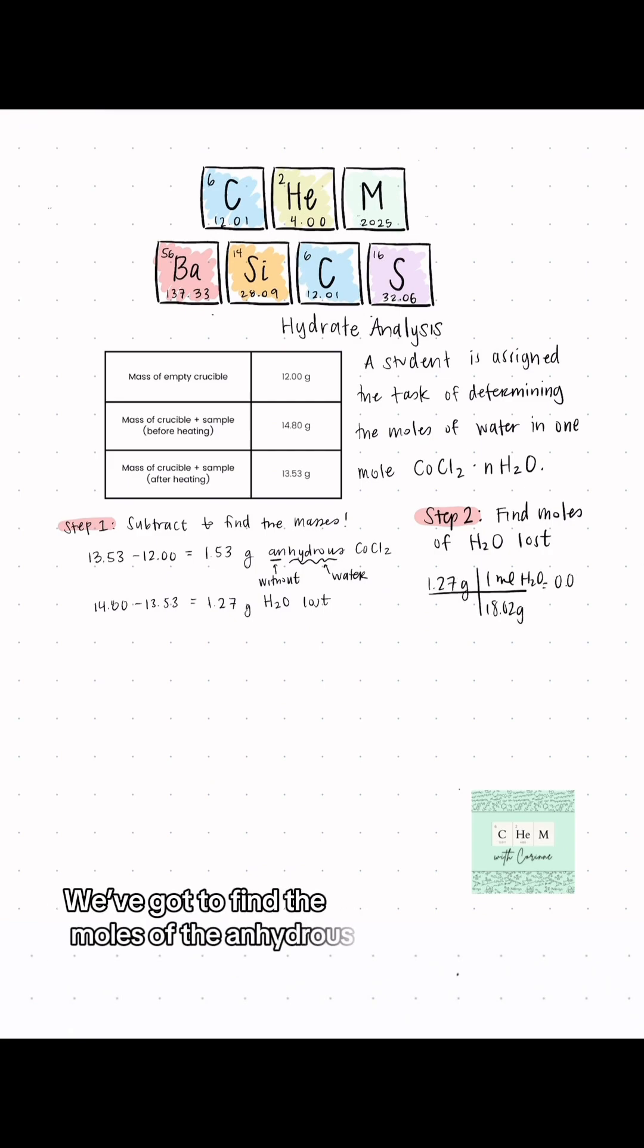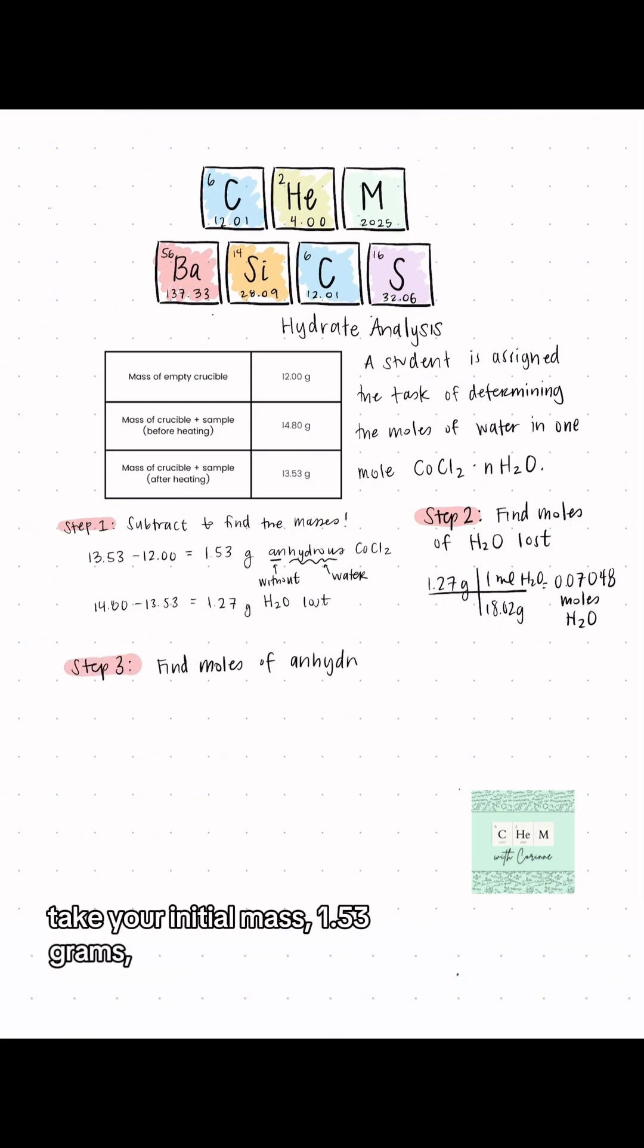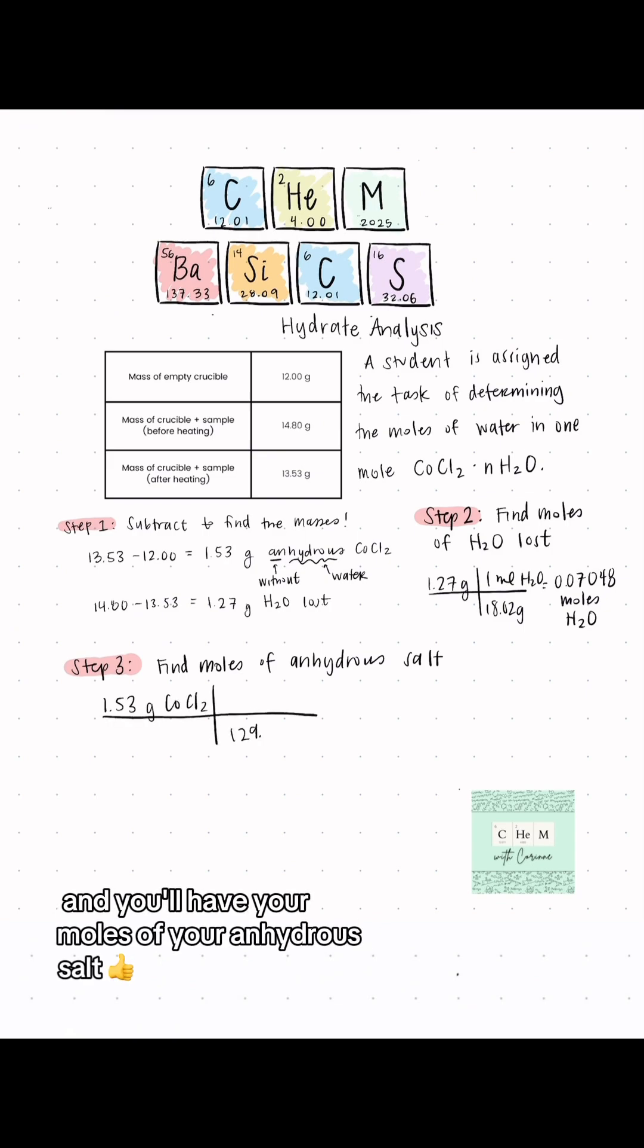Yep. Next up, we gotta find the moles of the anhydrous salt. Quickly determine the molar mass of that cobalt to chloride. Take your initial mass, 1.53 grams, divide by the molar mass and you'll have your moles of your anhydrous salt.